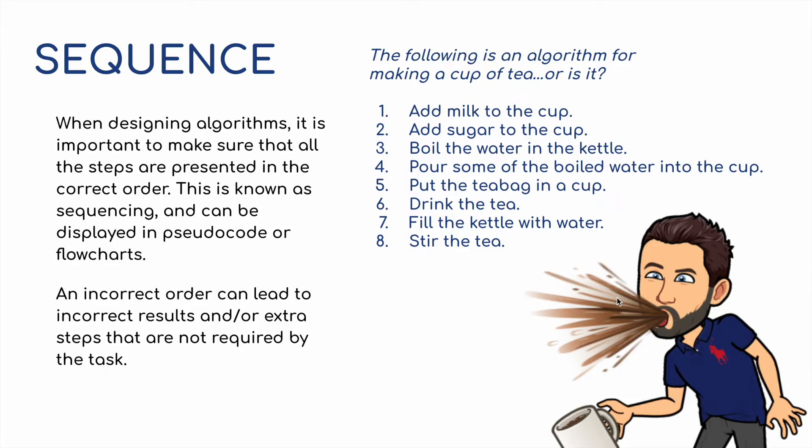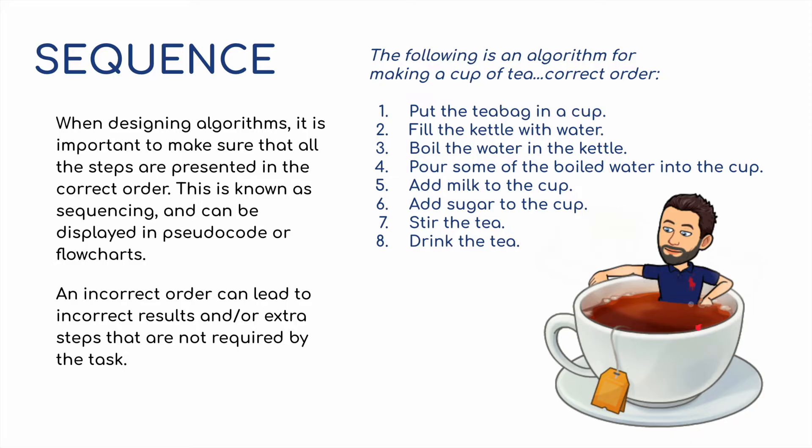What we should be looking at, we put the teabag in the cup, we fill the kettle with water, we boil the water in the kettle, we pour some of the boiling water into the cup from the kettle, we add the milk, we add the sugar if needed, and then we stir the tea, and then we drink the tea. So basically we've put this order into the correct sequence so it will work properly.